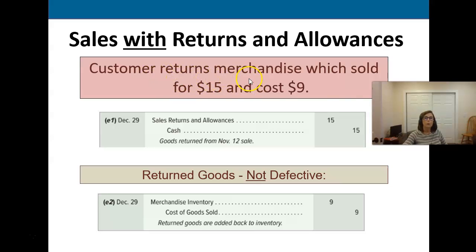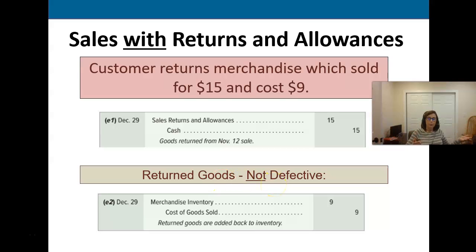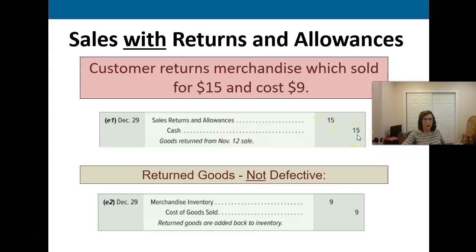In this case we've got a customer returning merchandise which sold for fifteen dollars and cost us nine. The customer is going to give us all that merchandise back, and it's important to note that these goods are not defective. We wouldn't want to put defective goods back in our inventory, but since there's nothing wrong with them — the customer just didn't like them — we're going to send those back into our inventory. So we're going to basically reverse the sale, give the customer back the cash, credit cash, and debit sales returns and allowances, so we still keep track of the sale.